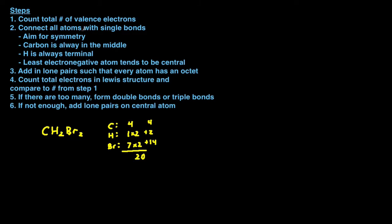Step number two: connect all the atoms with single bonds. The biggest rule here is to aim for symmetry — that will help you determine which one is going to be the central atom. Carbon, if present, is always going to be in the middle. Hydrogen is always going to be terminal, meaning at the end, and the least electronegative atom tends to be central. So for CH₂Br₂, carbon goes in the middle with hydrogen, hydrogen, bromine, and bromine around it.